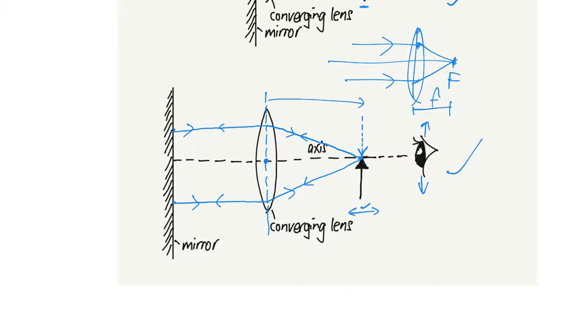So that means when you get this kind of image coinciding with the object, the distance from the optical center to the image here, or the object, will be your focal length.